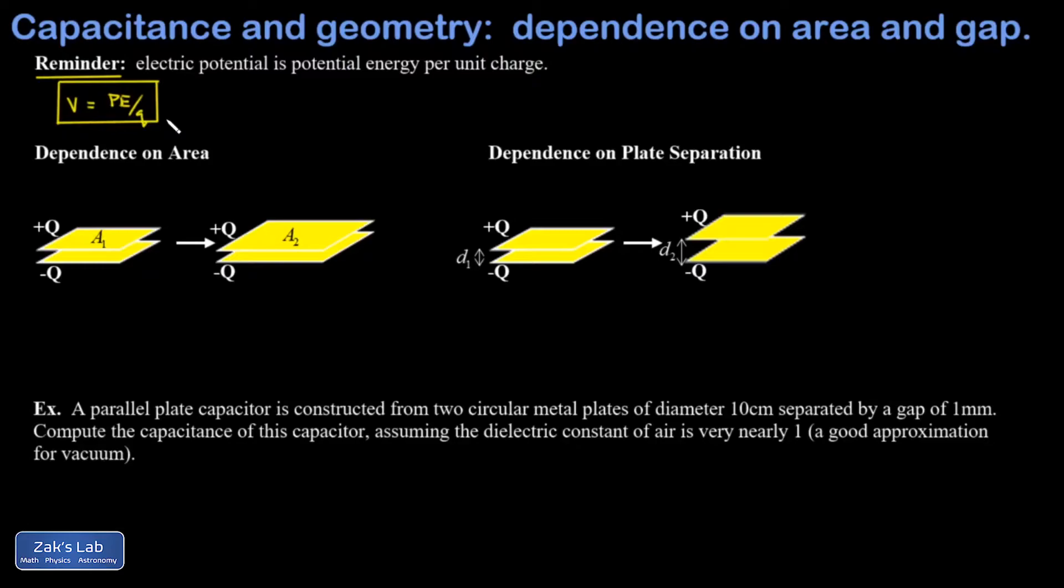The second source of potential energy is that you have unlike charges next to each other separated by a distance of the gap width. So I have plus charges on this upper plate, negative charges on this lower plate, and those experience a negative potential energy interaction between them.